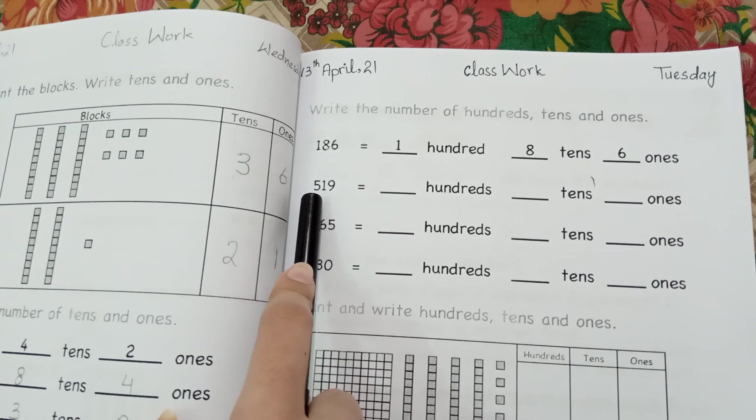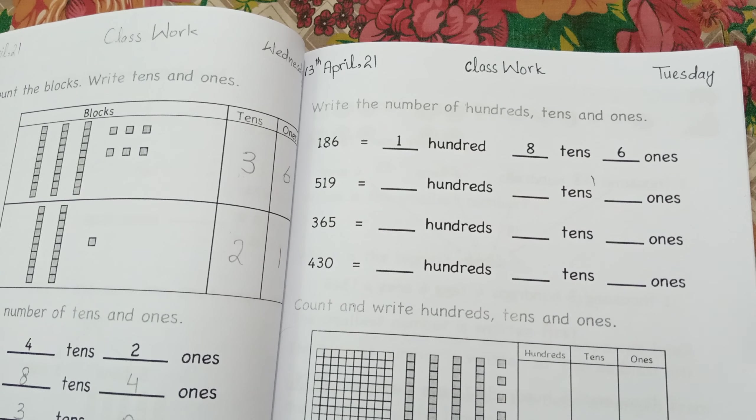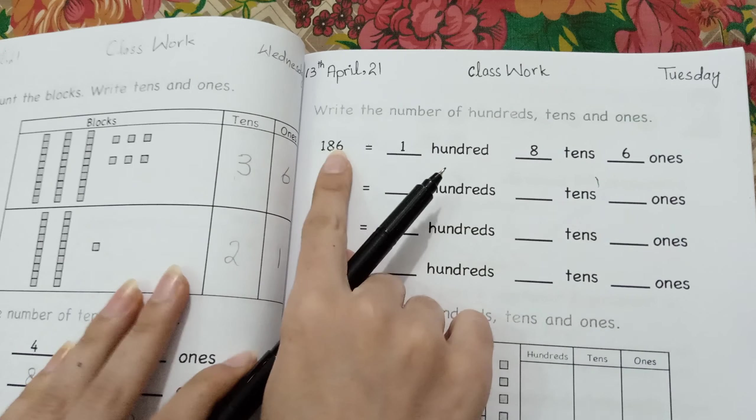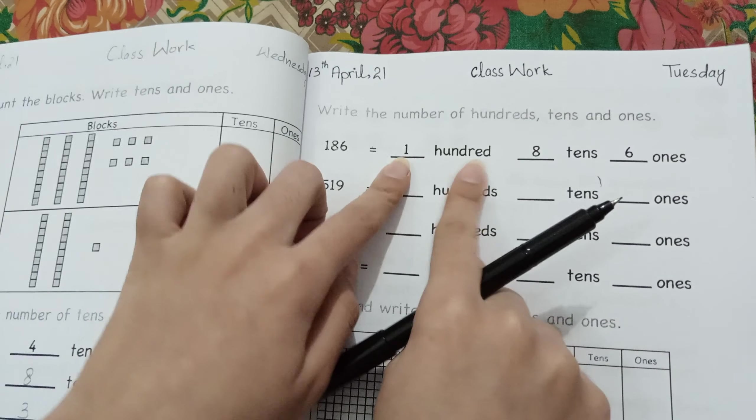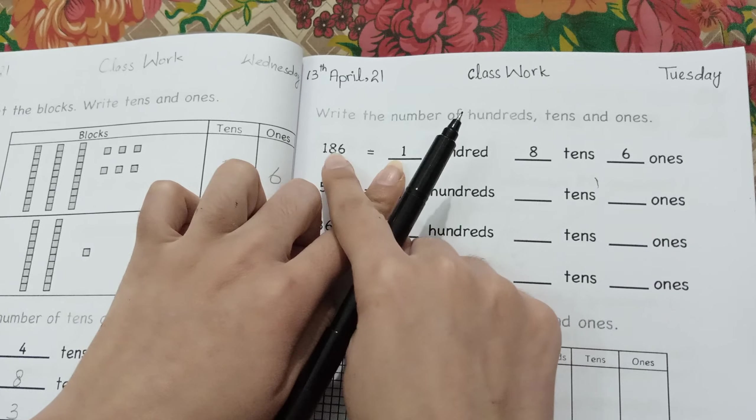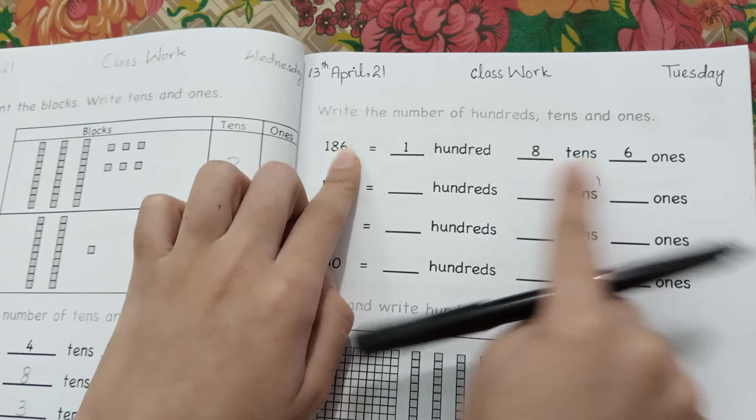How do we read this? 5 hundred and 19. This is already done. This is 186. 1 hundred, it means 1. 80 is 8 tens, and 6 is 6 ones.